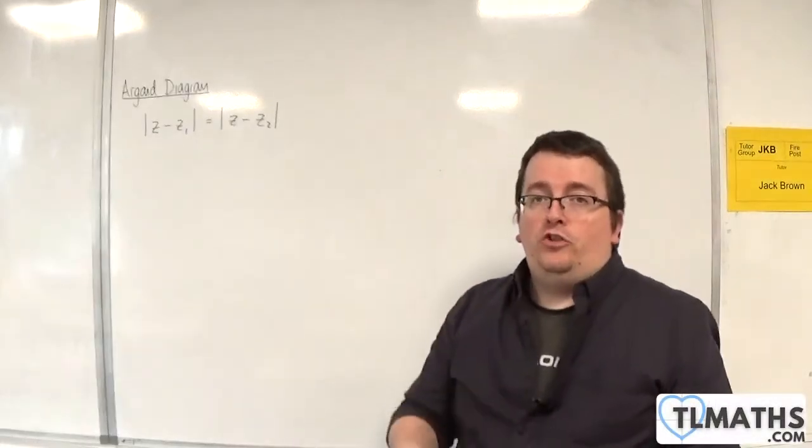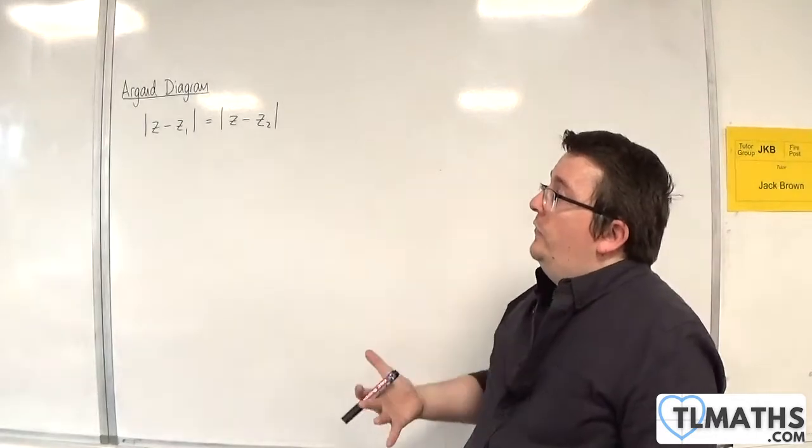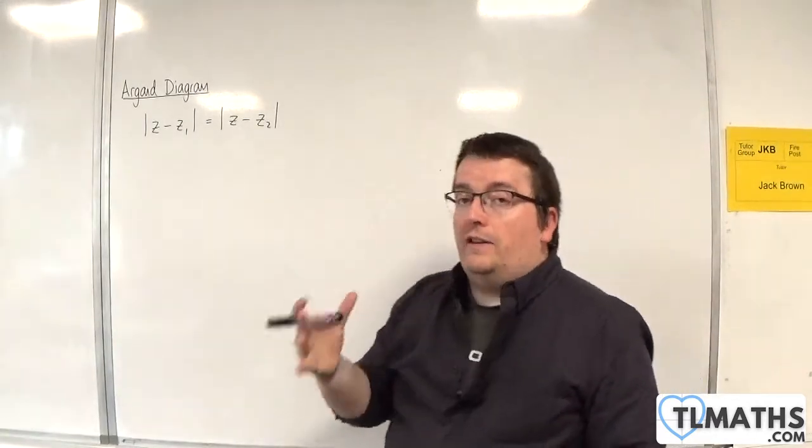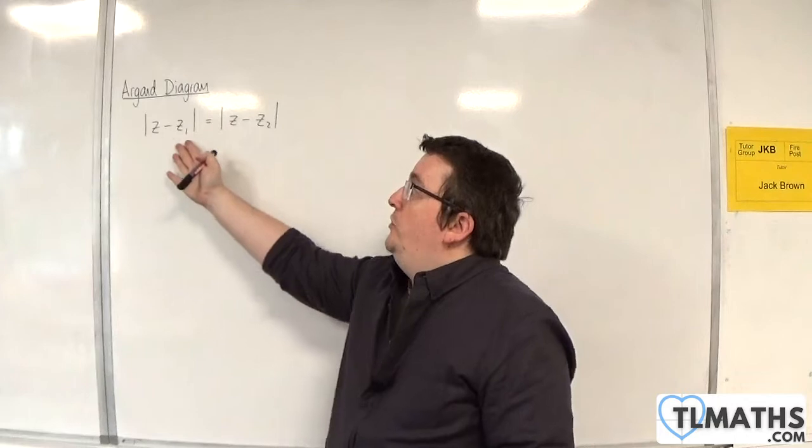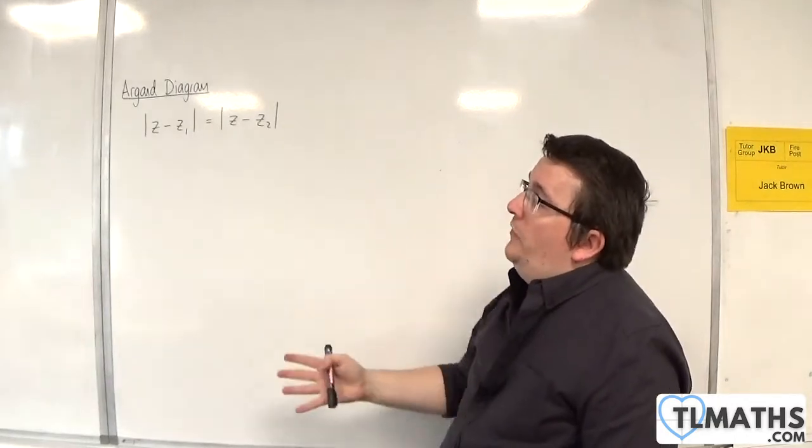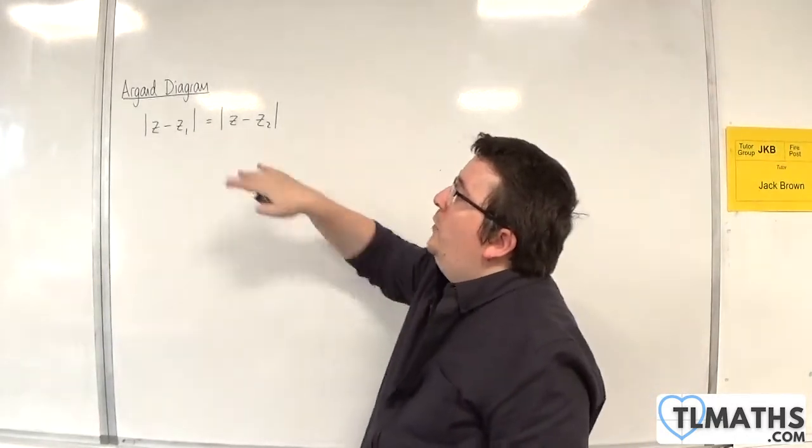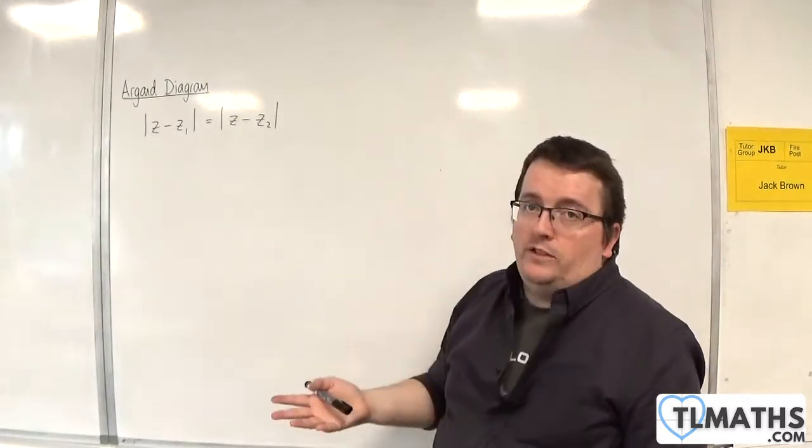In this video, I want to introduce you to how we can sketch loci on an Argand diagram of equations of this form: |z - z1| is equal to the modulus of z - z2.